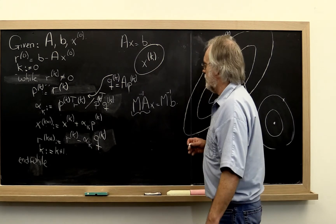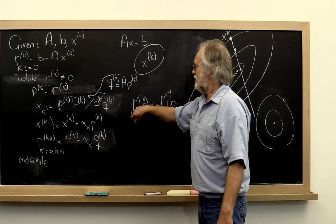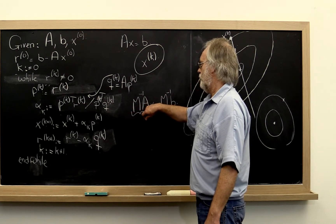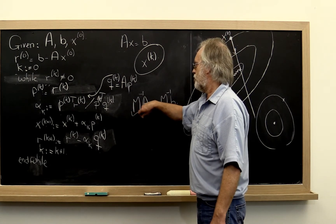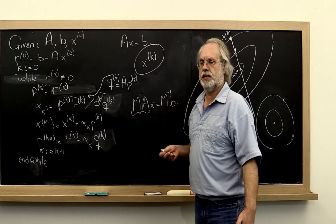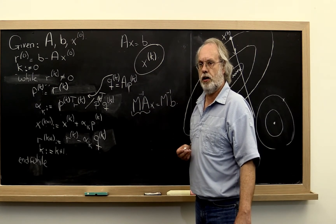How can we fix this? Well, merely picking M to be symmetric positive definite would make it resemble A more. But the product of two symmetric positive definite matrices is not necessarily symmetric positive definite. So that's not good enough.